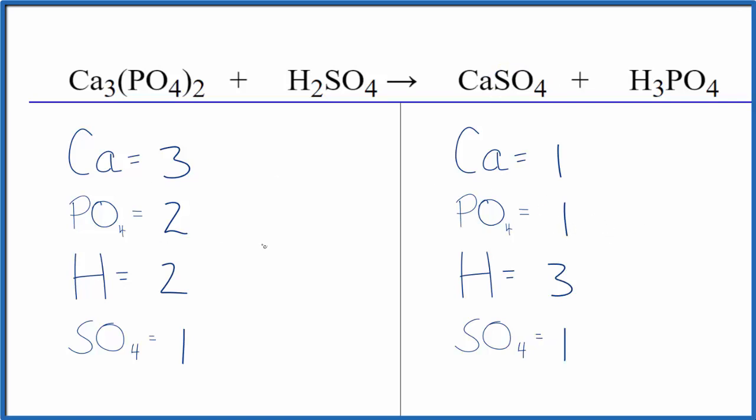Let's start balancing the phosphates. We can put a two in front of the phosphoric acid. So one times two. So the phosphates are balanced, and that's also nice because this two applies to everything. So we have three times two. That gives us six, and that's an even number. So that'll make it easier to balance the hydrogens.